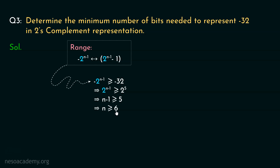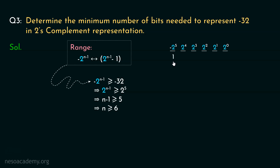Let's verify. For a 6-bit binary number, the place values are 2^0, 2^1, 2^2, 2^3, 2^4, and 2^5. In 2's complement, the MSB has a negative magnitude. To represent the minimum value, we place 1 under the MSB and all 0s in the remaining positions. This gives minus 32, confirming that 6 bits is correct.